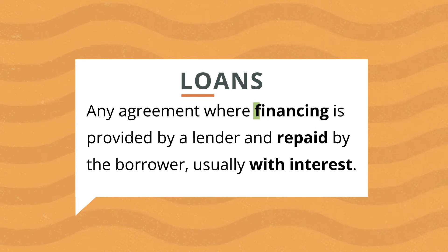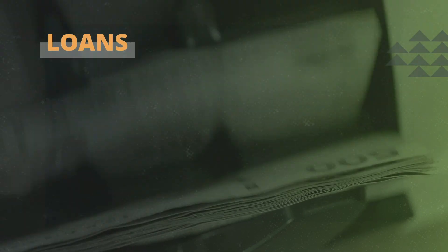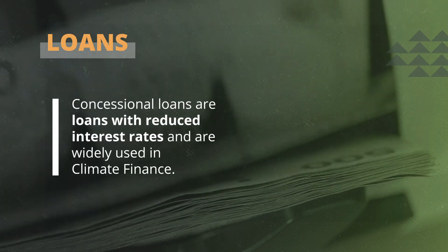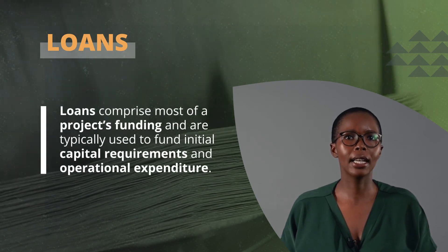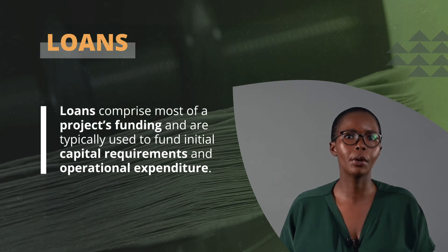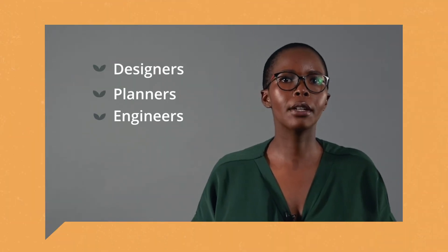The second type of project financing we'll look at is loans, also referred to as debt. Loans or debt refer to any agreement where financing is provided by a lender and repaid by the borrower, usually with interest. Many loans given to municipalities are categorized as concessional. Concessional loans are loans with reduced interest rates and are widely used in climate finance. They usually require the borrower to meet a certain set of criteria before being approved. Loans comprise most of the project's funding and are typically used to fund initial capital requirements and operational expenditures. This may include designers, planners and engineers in a construction or infrastructure project.